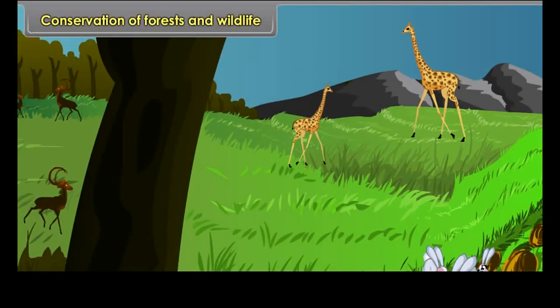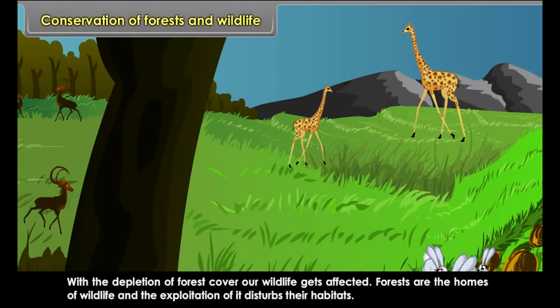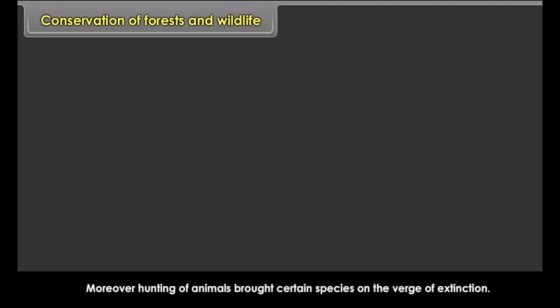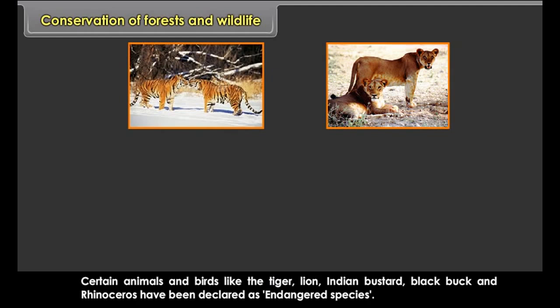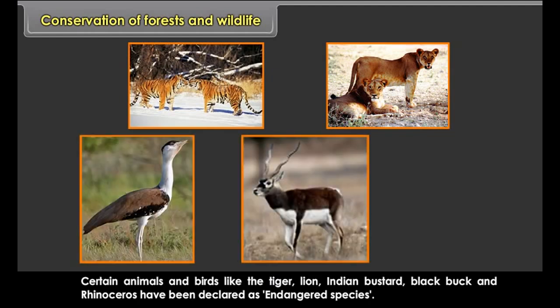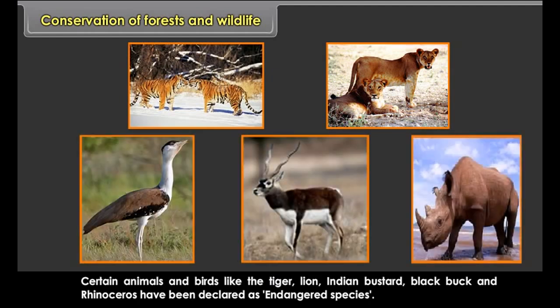Other birds found in India include parrots, pigeons, myna, geese, bulbul, ducks, crows, vultures, and owls. Deforestation and hunting have resulted in the disappearance of several species of wildlife, and many species have already become extinct.